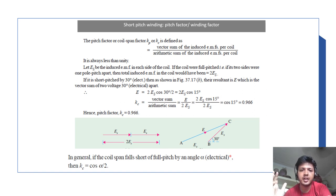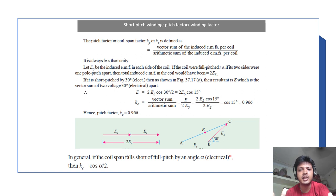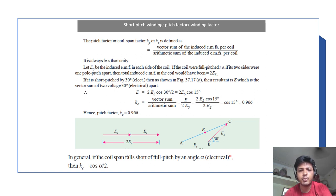Let Es be the induced EMF in each side of the coil. If the coil is full-pitched, the two sides are placed in slots 1 and 7 (one pole pitch apart) and the total EMF induced will be 2Es. If the stator coil is short-pitched by 30 degrees, then the resultant EMF equals 2Es × cos(30/2) = 2Es × cos(15°). So Kc = 2Es cos(15°) / 2Es = cos(15°).